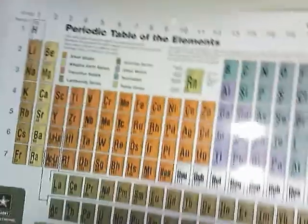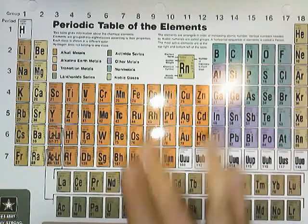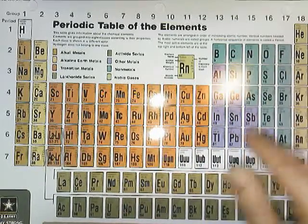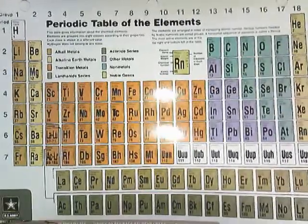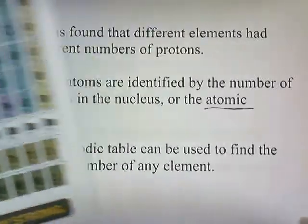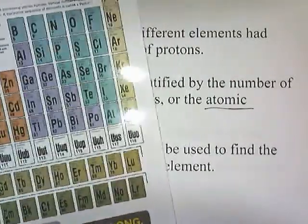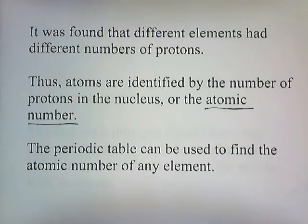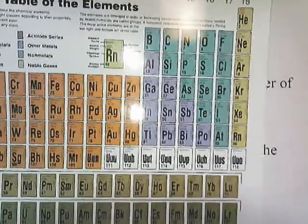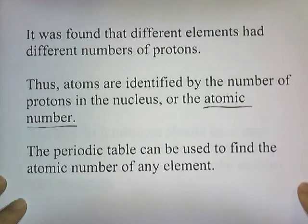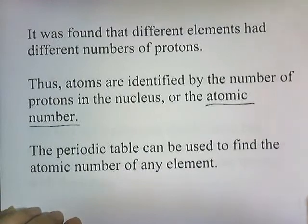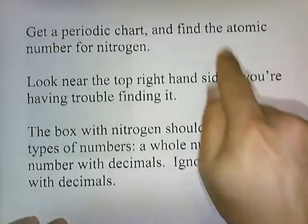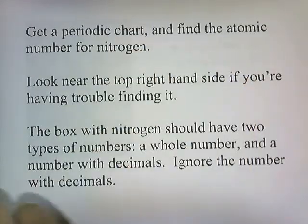This is what a periodic table looks like. It lists all the elements, and each box shows a symbol for the element. Inside the box are usually two main numbers. Get a periodic chart from your textbook or go online and download a picture of one. If you go to Google and type in 'periodic chart images,' you should be able to print a picture of the periodic chart. Then see if you can find the atomic number for nitrogen.